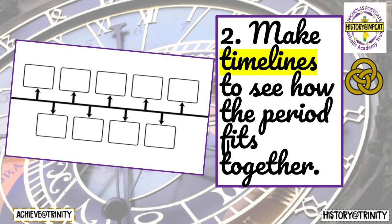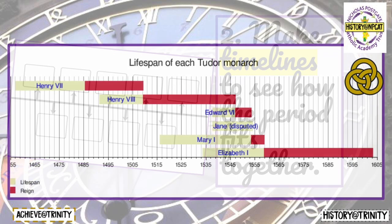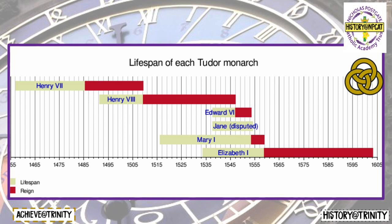Timelines are extremely useful. The act of making one's own timeline makes you think about the key dates. When complete, timelines help show how a period fits together and support students with their basic chronological understanding. Having a strong grasp of when events happened is also useful when evaluating the provenance of historical sources. This simple timeline shows the lifespan of each Tudor monarch, giving an instant visual of the chronology of the Tudor period and a secure foundation for further knowledge.